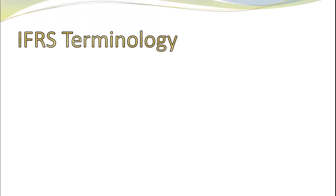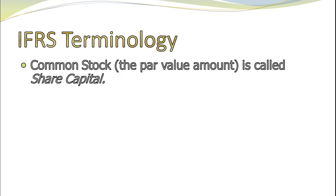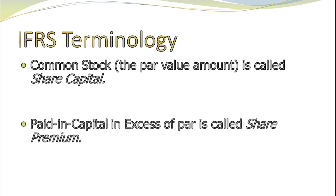IFRS has the same exact process, but uses different names. Under US GAAP, we call it common stock — under IFRS, they call it share capital. Under US GAAP, we call it paid-in capital in excess of par, or additional paid-in capital — under IFRS, they call it share premium, which goes back to the idea we used with bonds: if you pay extra for something, we call it a premium.